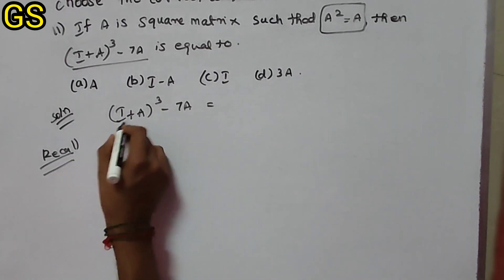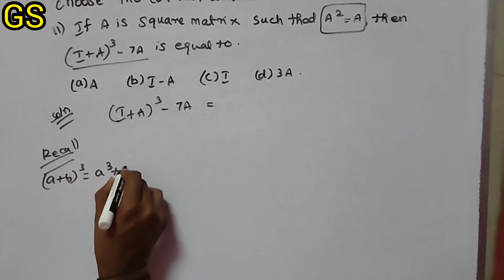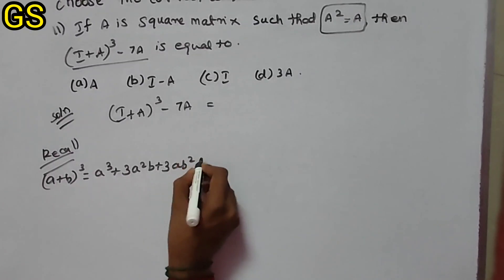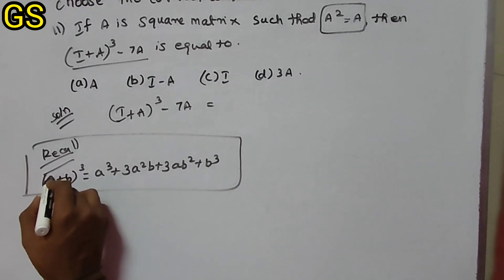Recall the formula: (a+b)³ = a³ + 3a²b + 3ab² + b³. So in place of a we put I, and in place of b we put A.